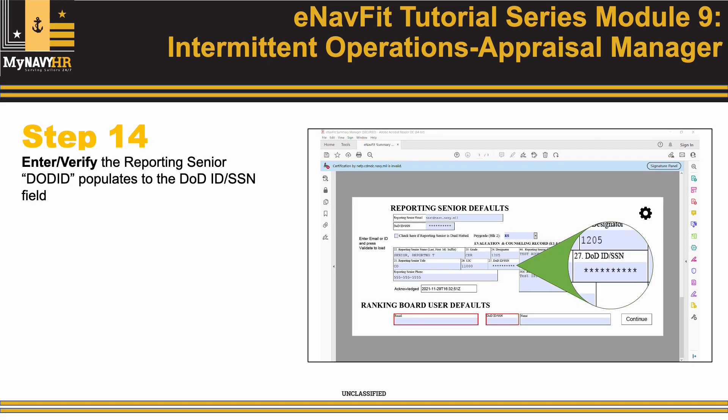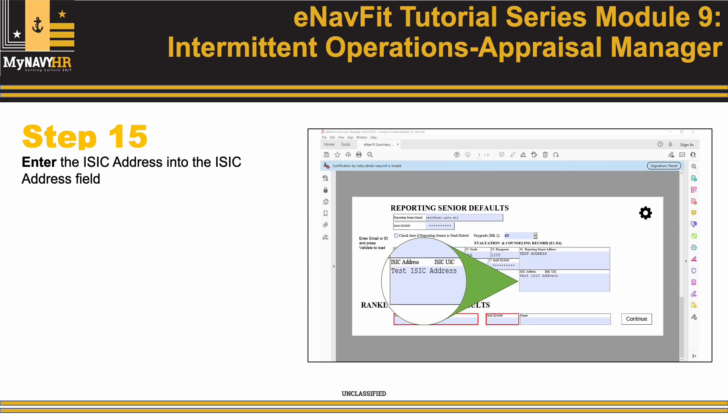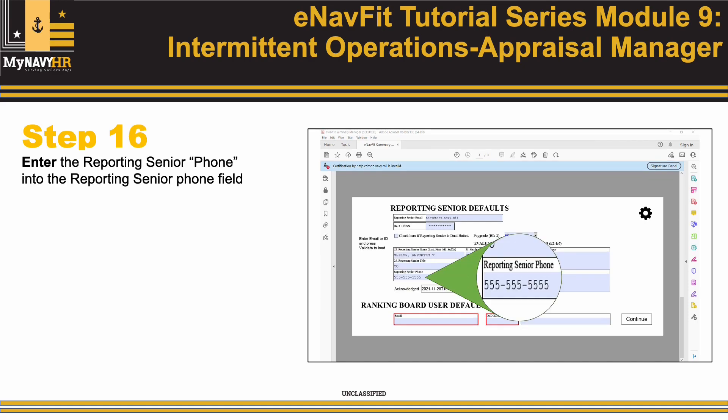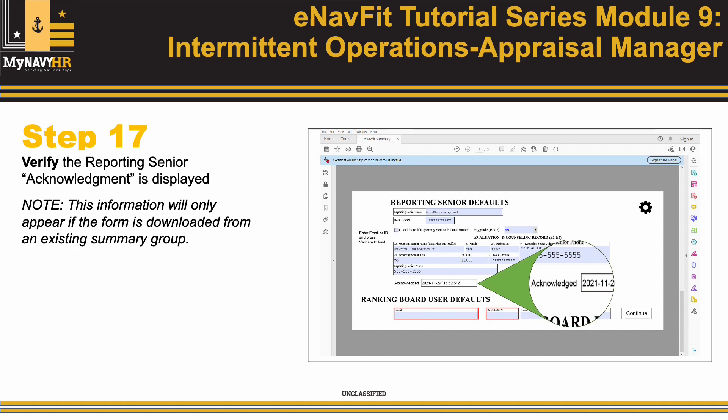Step 14: Verify the Reporting Senior DOD ID populates in the DOD ID SSN field. Step 15: Enter the ISIC address into the ISIC address field. Step 16: Enter the Reporting Senior phone into the Reporting Senior phone field. Step 17: Verify the Reporting Senior Acknowledgement is displayed. Note: this information will only appear if the form is downloaded from an existing Summary Group.